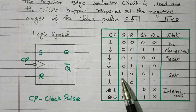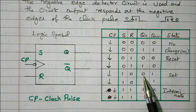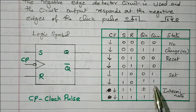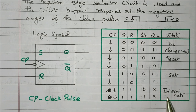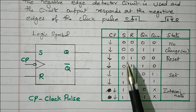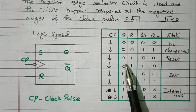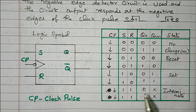The third combination is S=1, R=0 — this is the set condition. Set means the output is set to 1. If the present state is 0, it changes to 1; if it is already 1, it is retained. When S=1 and R=1, both are 1 — this condition is not defined in the SR flip-flop; it is an intermediate state. This condition is handled in the JK flip-flop.